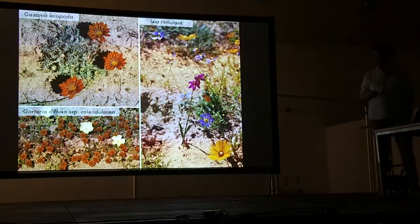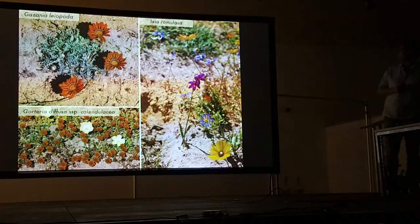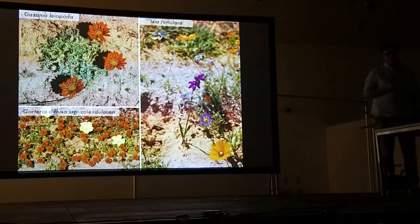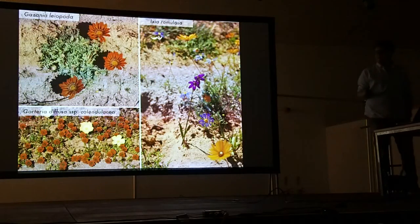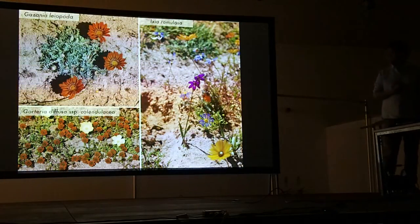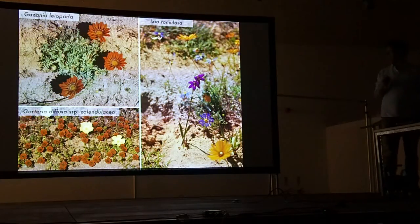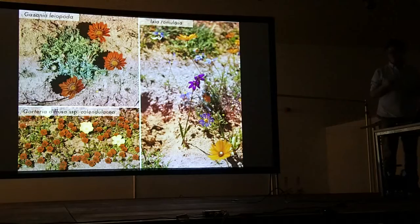Here we have an example of some of the annual daisies you get here, like Gazania leopoda and Ixia ramulosa. But I specifically want to talk about this little plant called Tyria diffusa. It's a really interesting plant, thought by many to be one of the most diverse species — it has the most different floral morphology, with about 14 different flower types within its species.